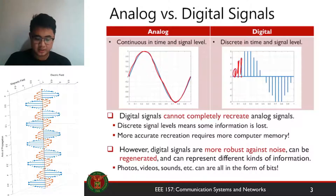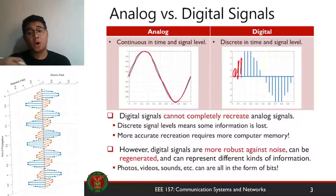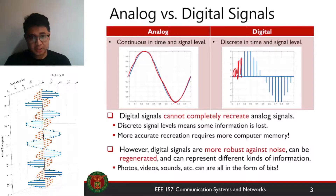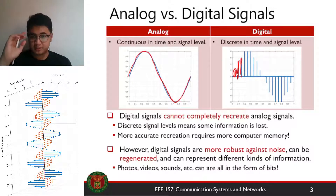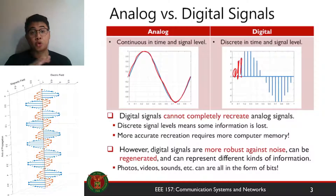For example, the signal at one time point has a value of 2, and at another it has a value of 5. When converting analog signals to digital, your digital signals cannot completely recreate the analog signal. Because of the discretizing process, you're losing some information. If you want a more accurate representation, you need to use more computer memory.